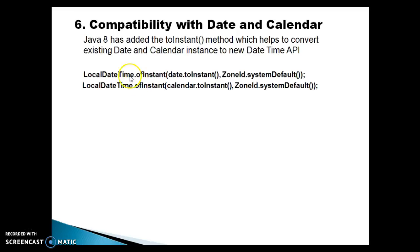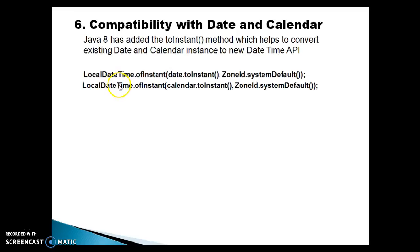We have LocalDateTime, a class added in JDK 1.8. This class has a method called ofInstant — it's a static method, so you can call it directly by class name. You pass the Date from the previous JDK version, imported from java.util.Date. Java has also added a toInstant() instance method on Date, so you call date.toInstant(), passing ZoneId.systemDefault(). Similarly, if you have a Calendar instance, call calendar.toInstant() with the system default time zone. If you have a Date instance, convert it using the first line of code; if you have a Calendar instance, use the second line of code.